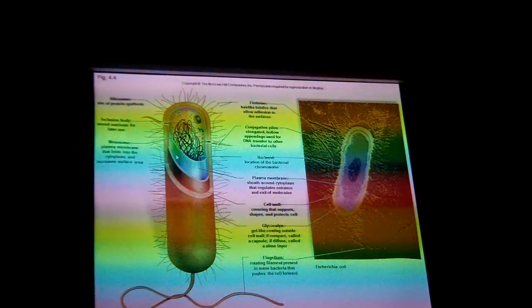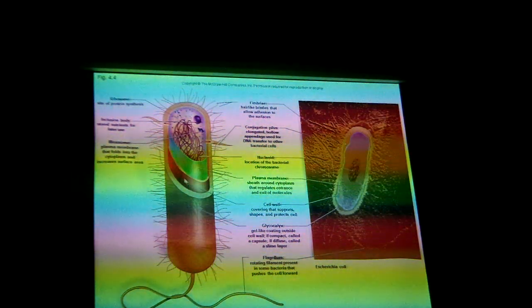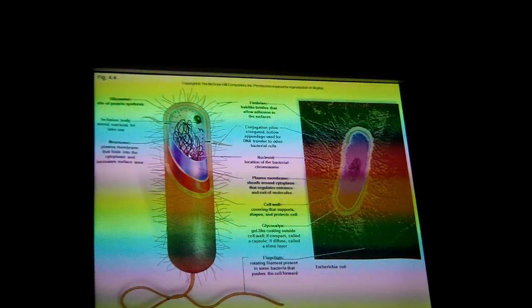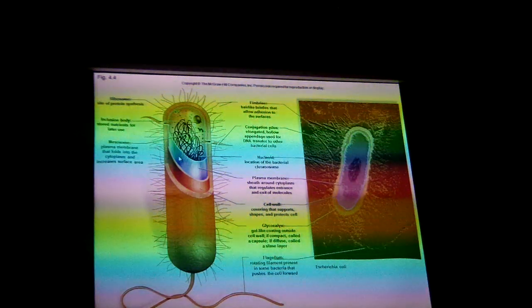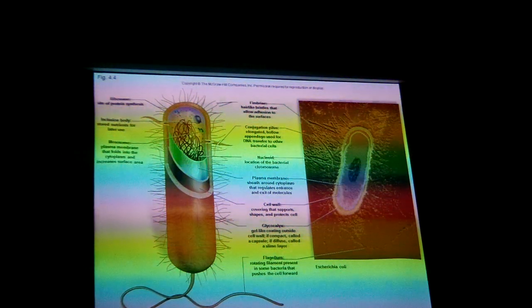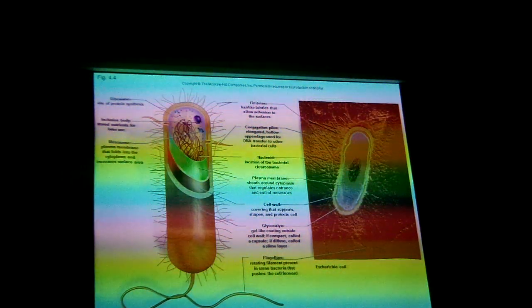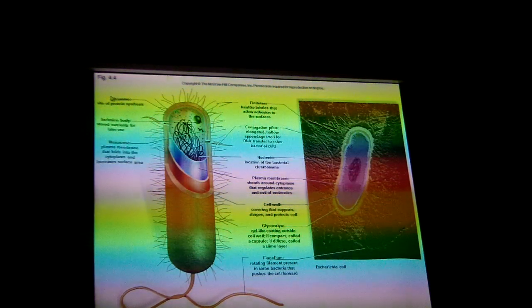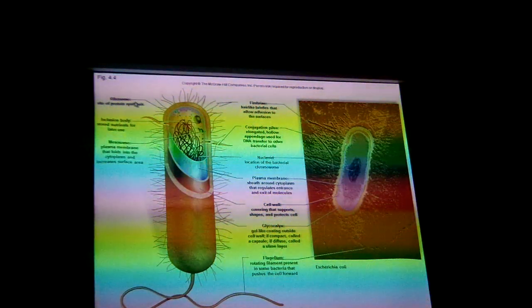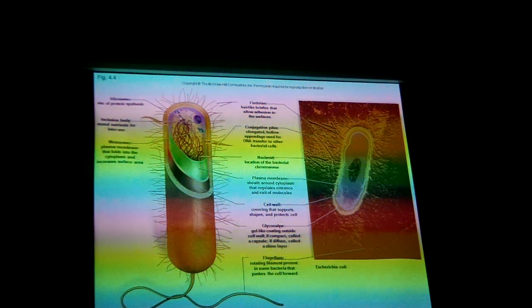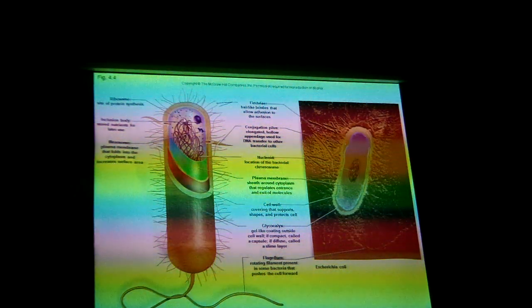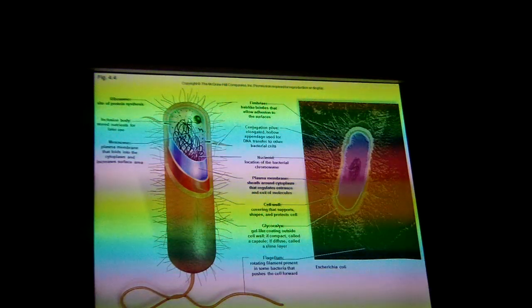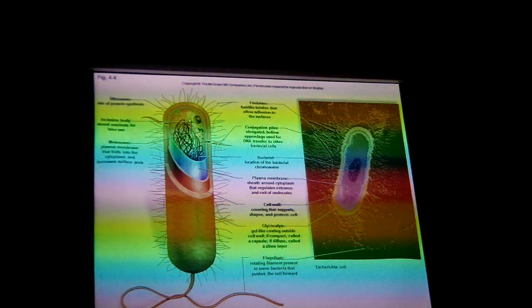So there are basically three layers protecting this thing. Inside the cell, all these little dots you see are called ribosomes, and they're where proteins are made. We're going to learn about how the cell makes proteins.